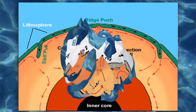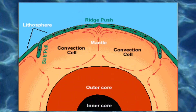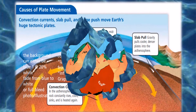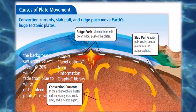Earth's crust and the very top of the mantle together form the lithosphere. The Greek prefix litho means stone or rock. This layer is the most rigid of all the layers. The lithosphere sits on top of the asthenosphere, a layer of hotter, softer rock in the upper mantle. The Greek word asthenes means weak. This layer is not actually weak, but it is soft enough to flow slowly like hot tar.